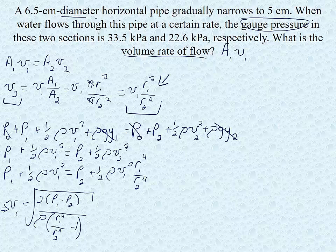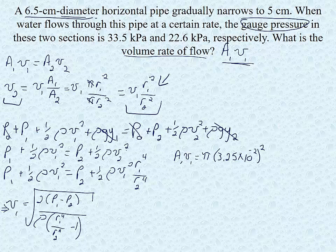We aren't interested in v1. We are interested in a1v1 because we are interested in the volume flow rate. So that means we have to take this whole thing and multiply it by a1 which would be pi r squared. So a1v1 then equals pi times 3.25 times 10 to the negative 2 squared because remember 6.5 centimeters is the diameter. So divide it by 2. Change it to meters.